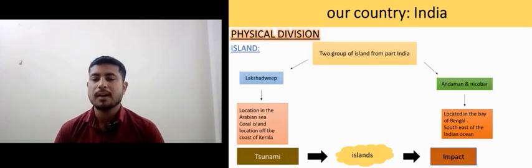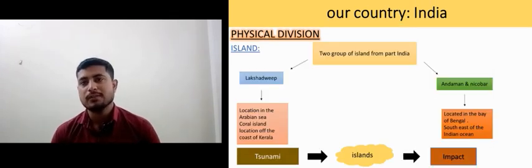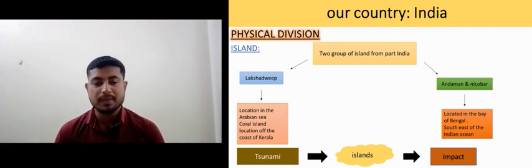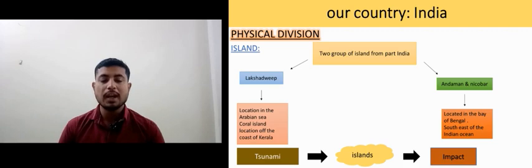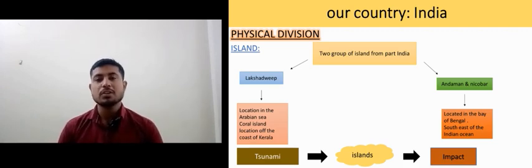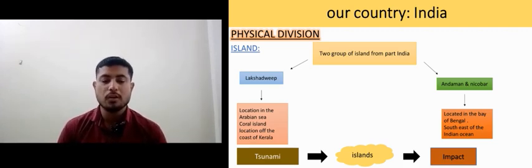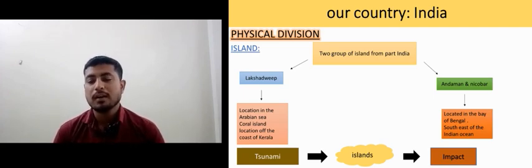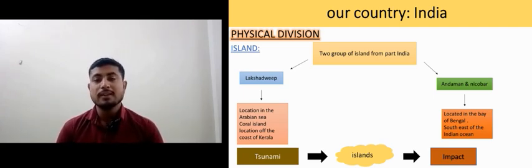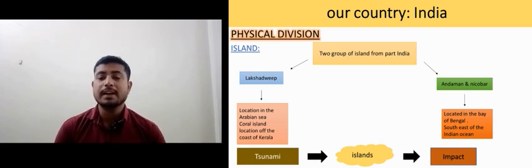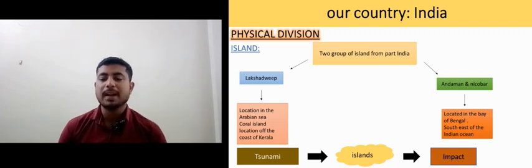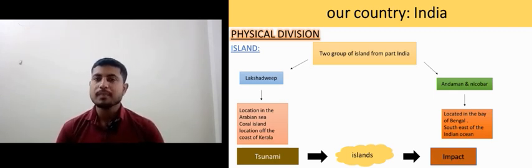Now we have the islands. There are two groups of islands. The first one is Lakshadweep, situated in the Arabian Sea — it is a coral island located off the coast of Kerala. The second one is the Andaman and Nicobar Islands, located in the Bay of Bengal, to the southeast in the Indian Ocean. Tsunamis can impact these islands.